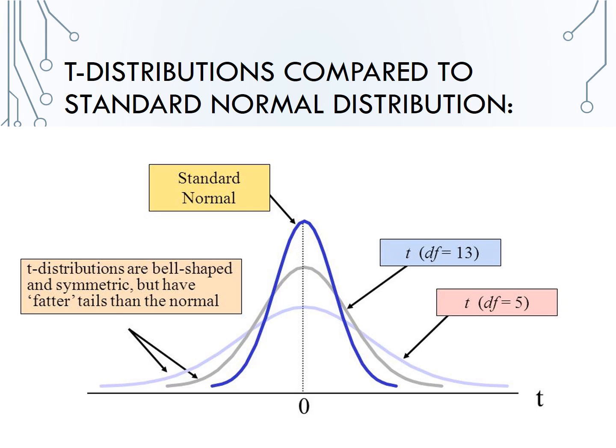That means we will not use 1.96 for 95% confidence, but we will always tell you what multiplier to use.